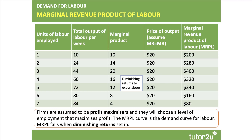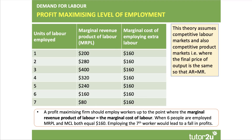Some boards require you to understand Marginal Revenue Product of Labour (MRPL), which is essentially the revenue a firm gets from employing extra workers. It's the marginal product of workers — you employ extra people — times by the price of the output when you sell the product. After the third worker, marginal product is declining from 20 to 16 to 12 to 8. If we're selling each unit for $20, the marginal revenue product of labour is also declining. A profit-maximising firm will employ workers up to the point where MRPL equals the marginal cost of labour. So they'll employ the fifth worker — they add $240 to revenue but only cost $160.